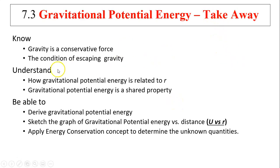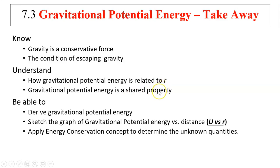Let's review what we learned today. Gravity is a conservative force — the path doesn't matter, and total mechanical energy is conserved. The condition for escaping is that at infinity the total energy equals zero: kinetic energy equals zero and potential energy equals zero. Gravitational potential energy is inversely related to r and is negative. The graph is below the horizontal axis and approaches zero as r increases. It is a shared property — without Earth, the object has no potential energy. To derive gravitational potential energy, we use an integral because the force is not constant. We apply energy conservation to find unknown quantities, usually speed or escape speed.